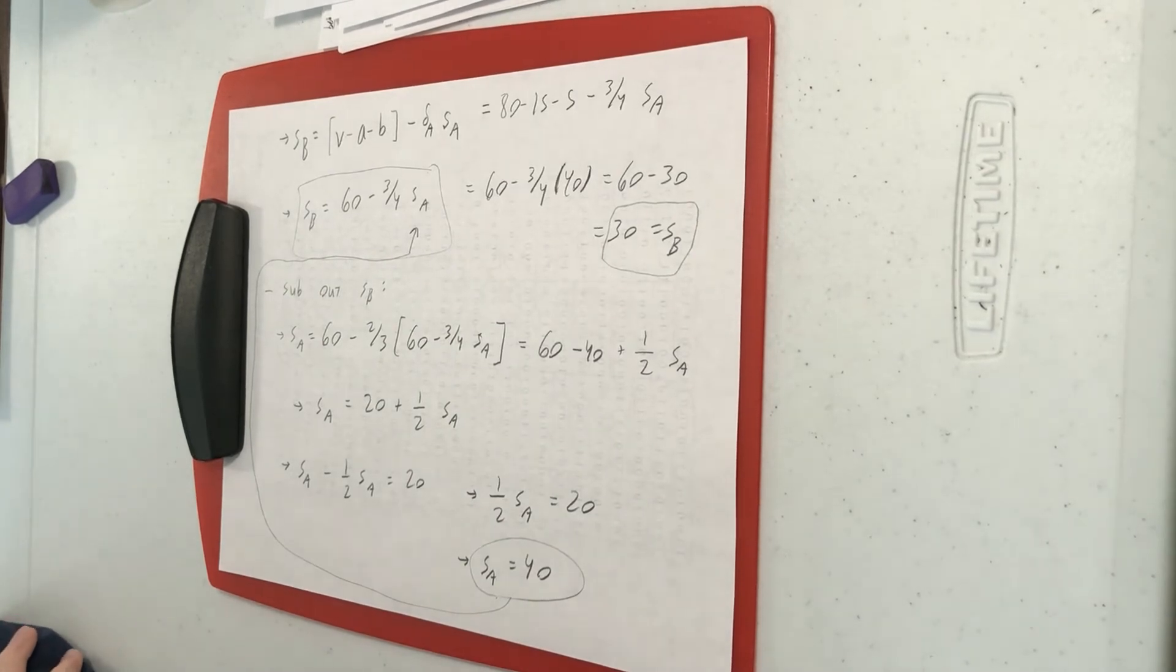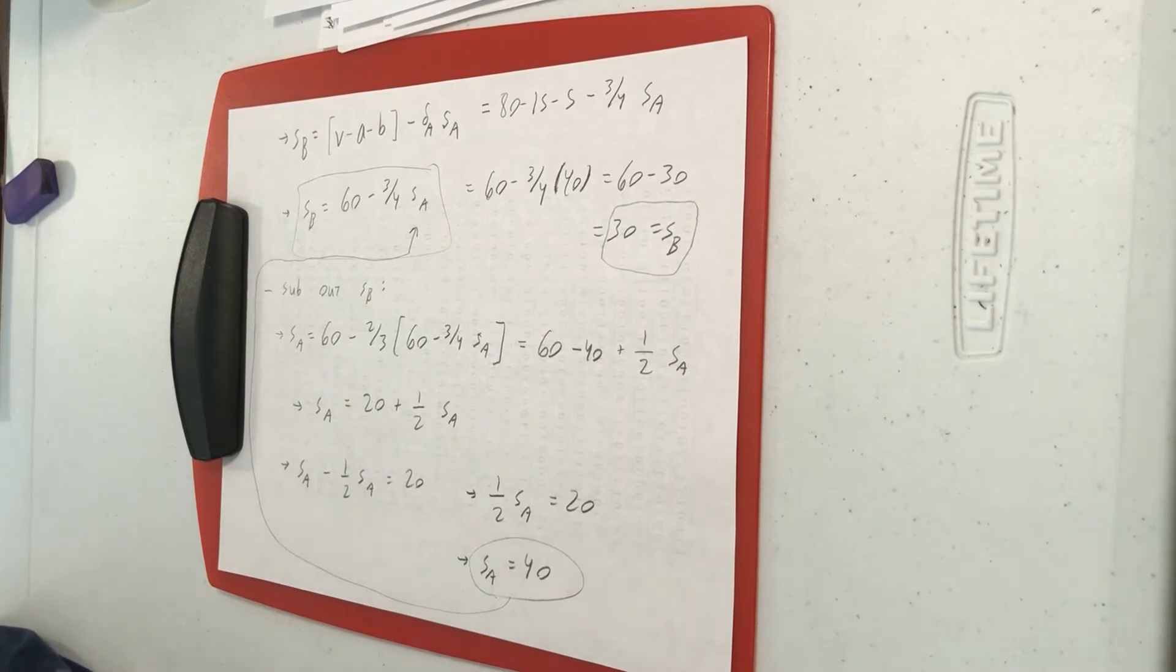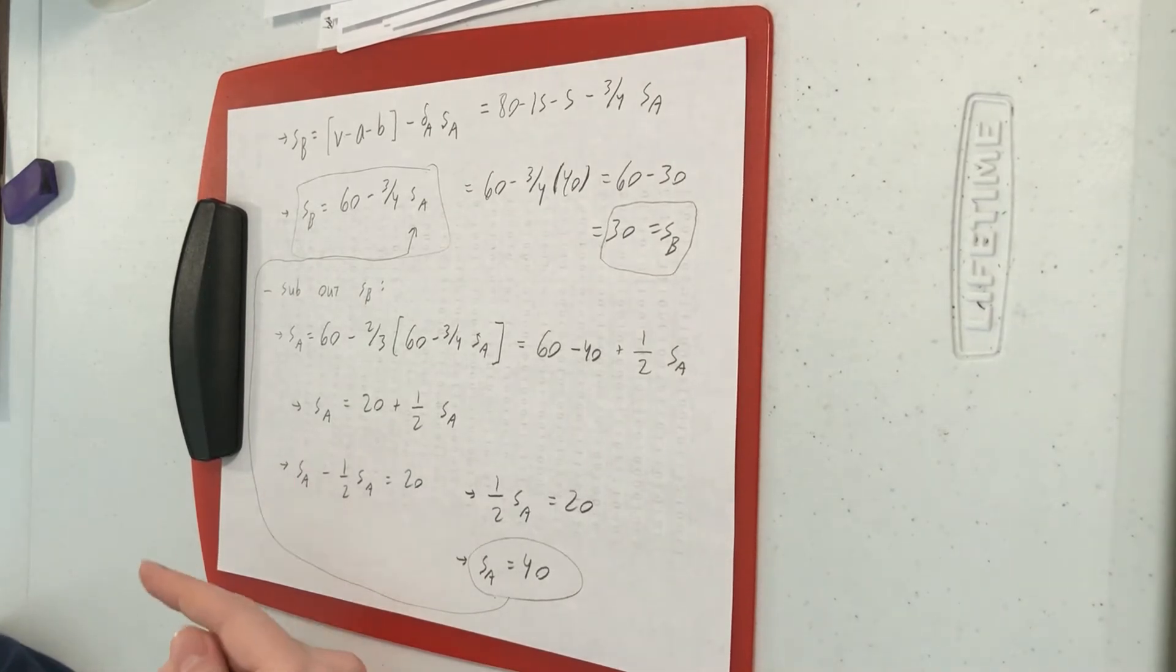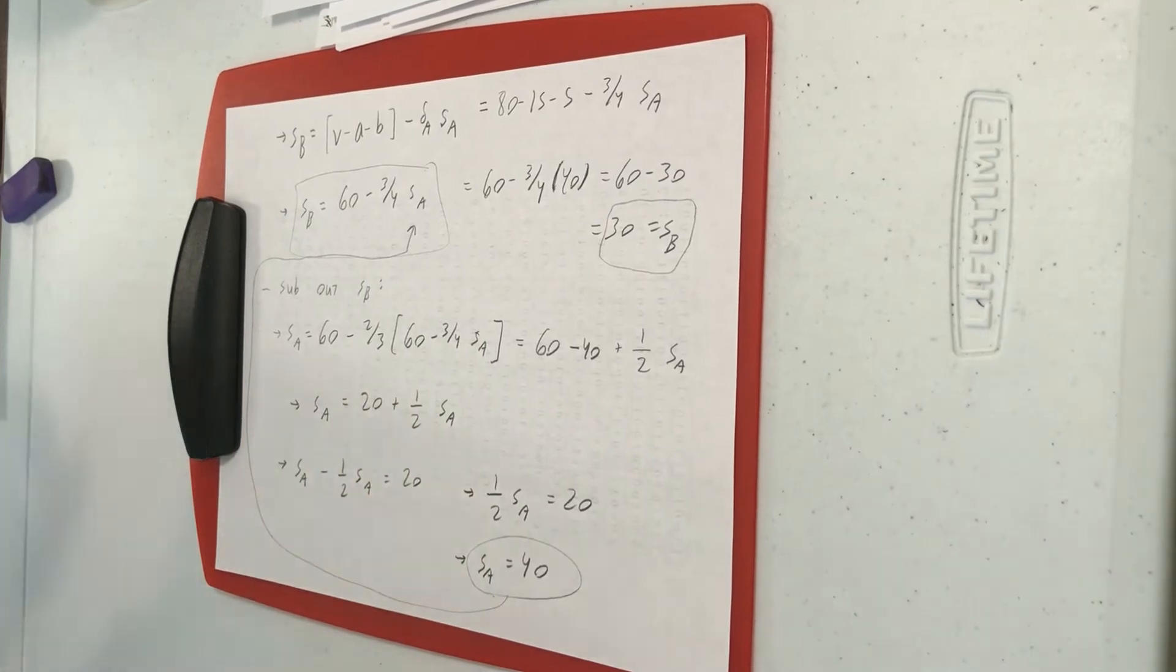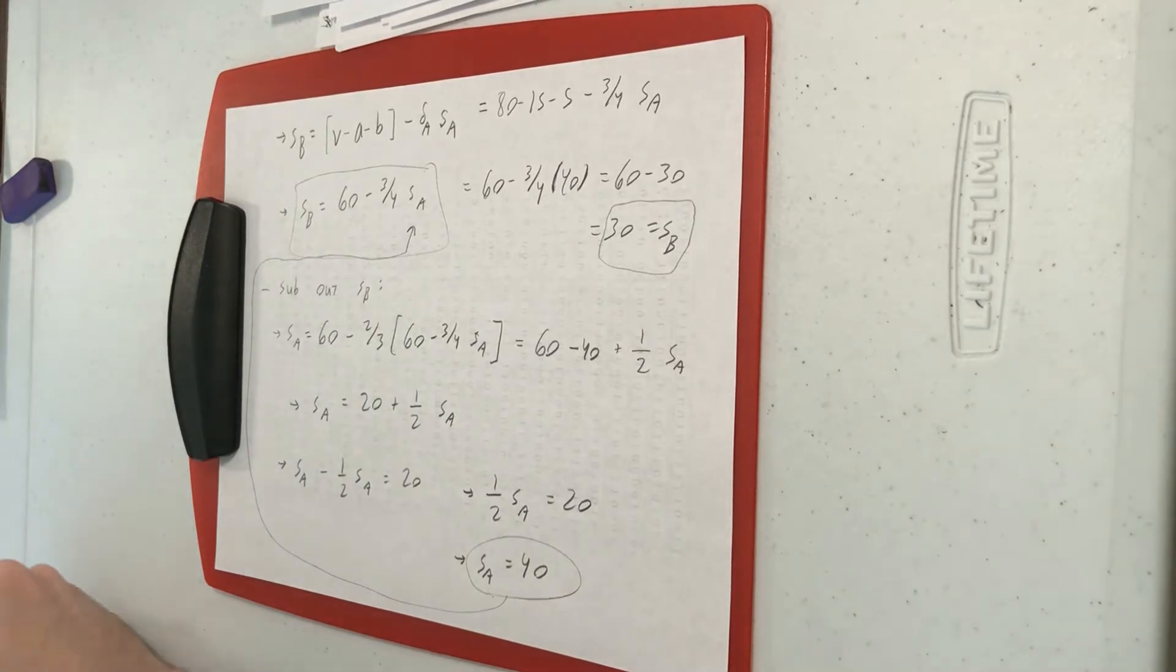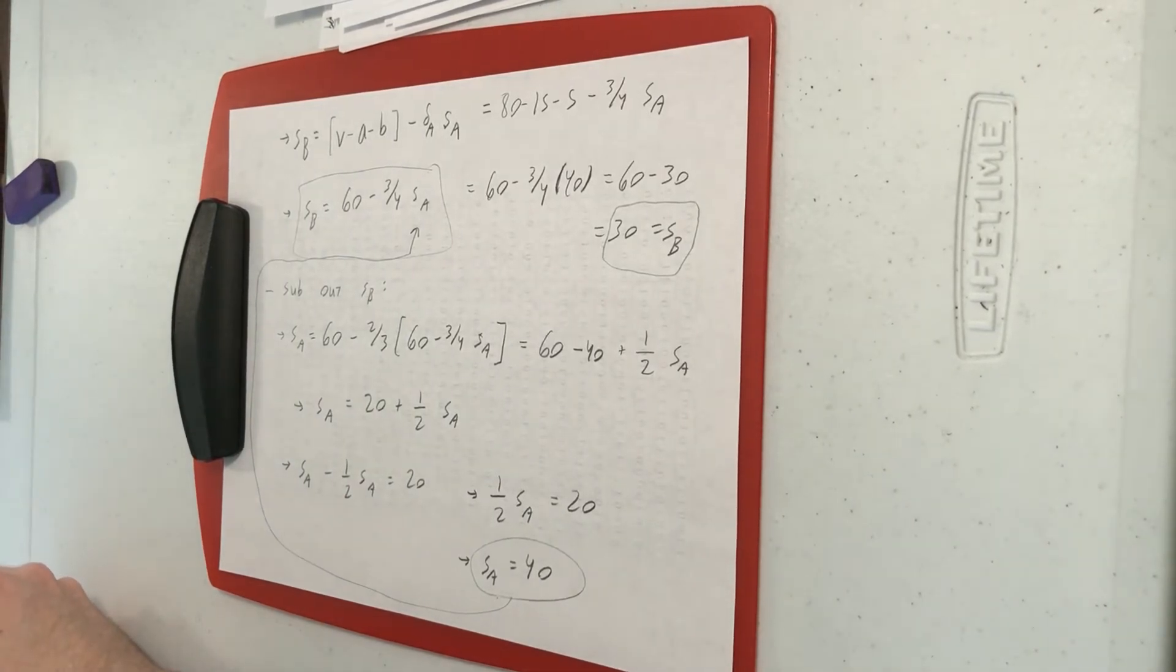Now, we're not done yet. We found the S's, but that's not what we're ultimately after. We want to know how much of the surplus does each side get, and what's the total amount each side gets. That's going to depend upon who's offering first. First, we'll look at what happens if A gets to make the first offer. We know it's going to benefit A, it's an advantage to make the first offer. Then we'll look at what happens if B makes the first offer.